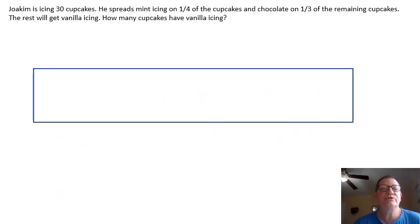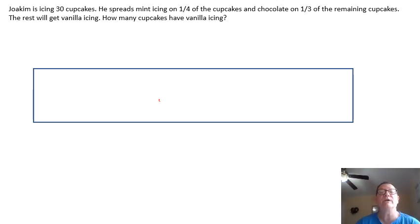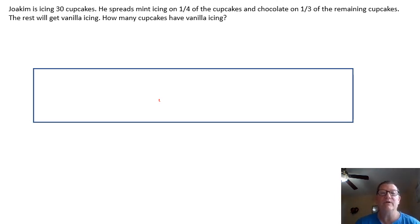Next one says: Joey Kim is icing 30 cupcakes. She spreads mint icing on one-fourth of the cupcakes and chocolate on one-third of the remaining cupcakes. The rest will get vanilla icing. How many cupcakes have vanilla icing? Once again, this is a lot of information, so I'm going to do my tape diagram — trying to make it a little prettier this time.